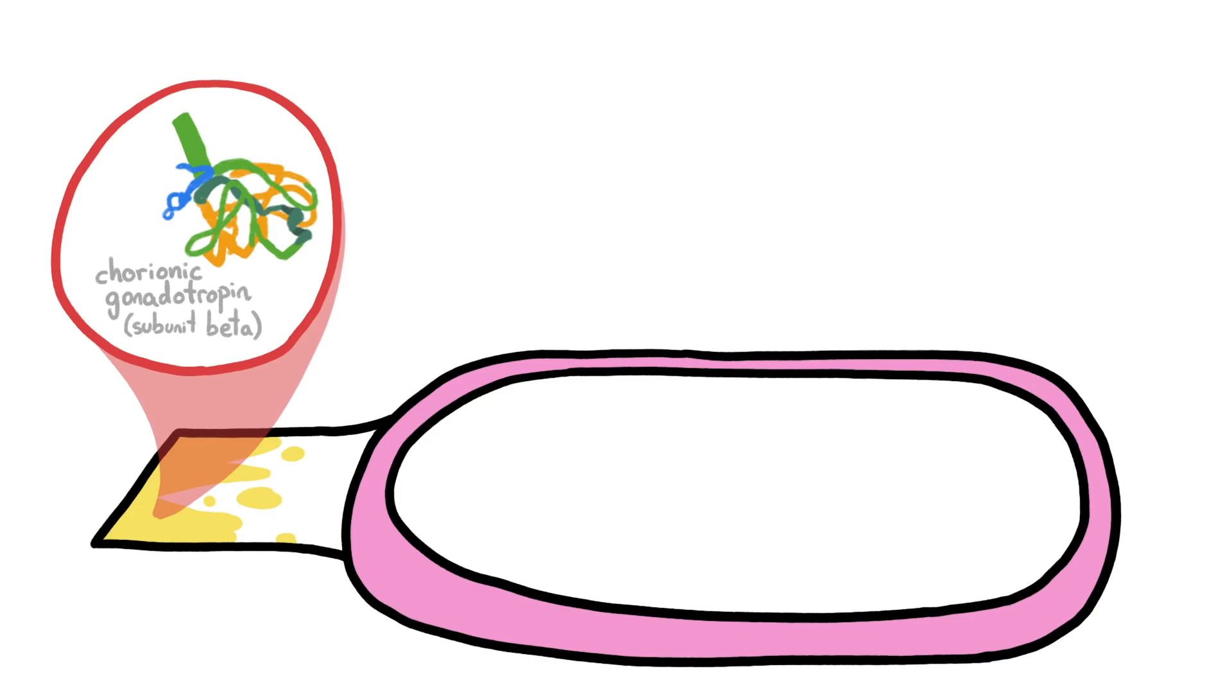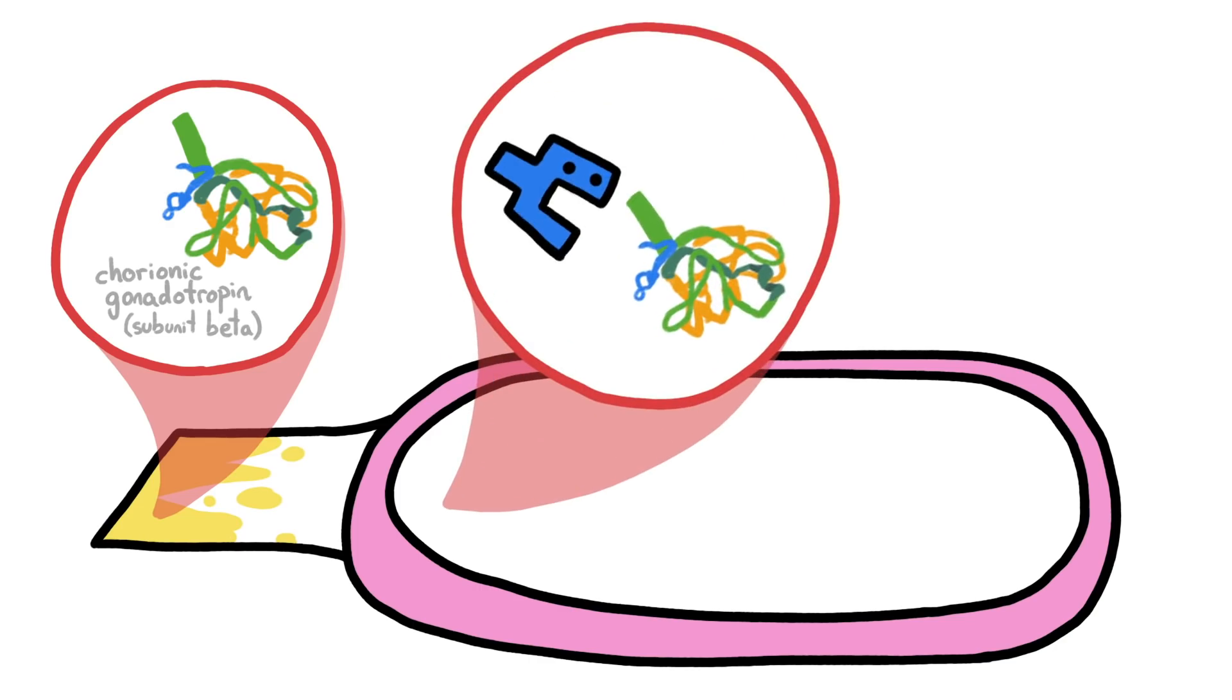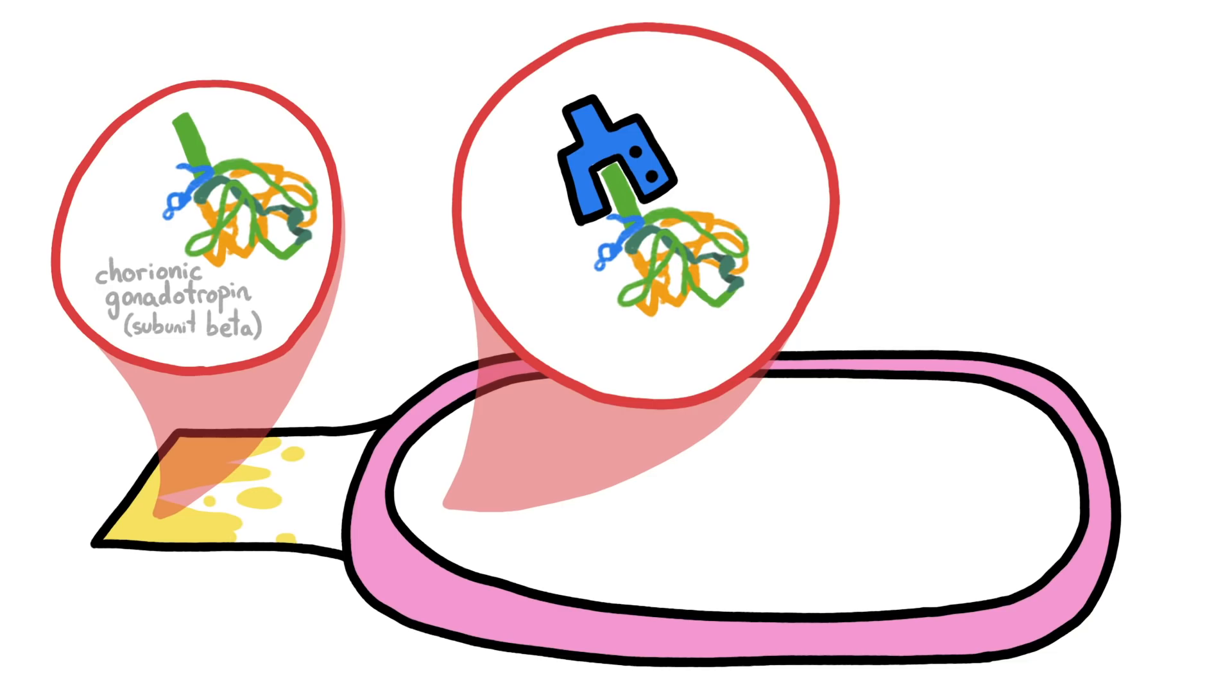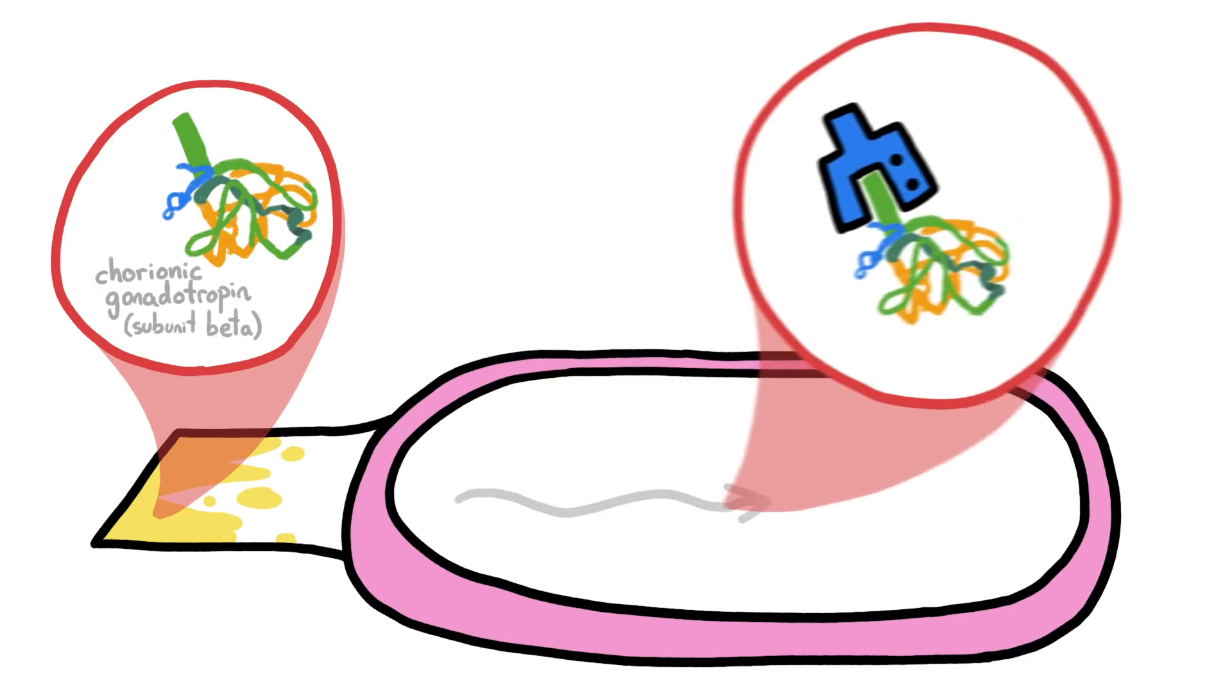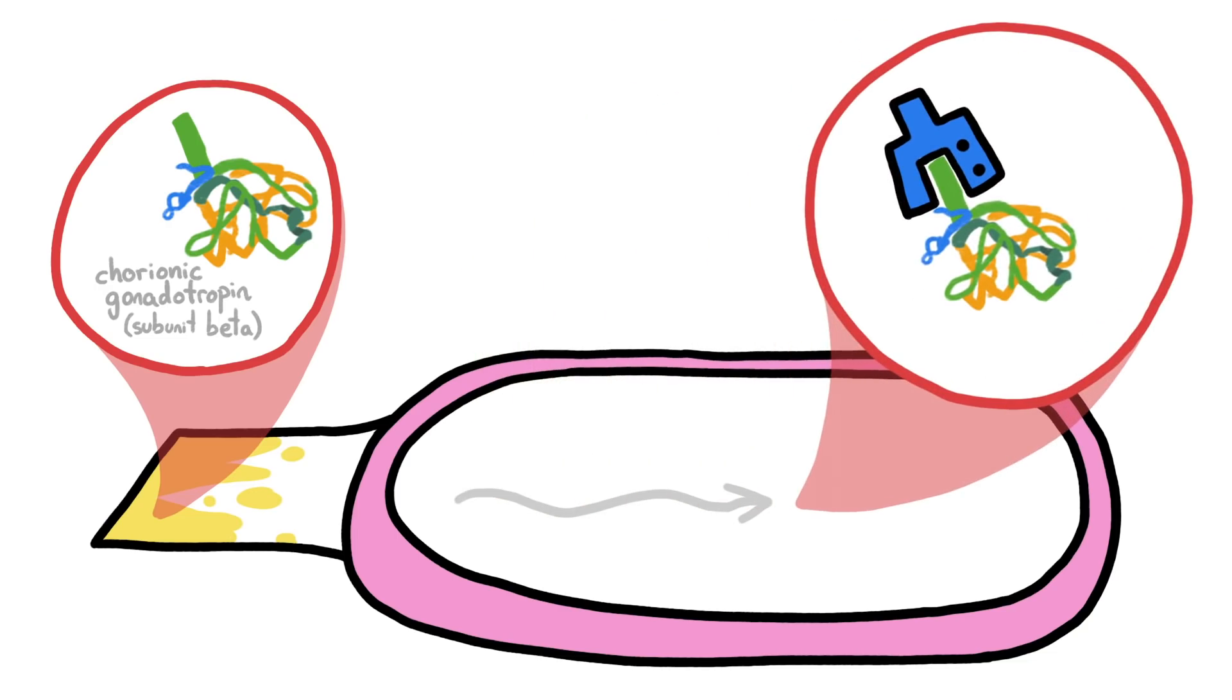If, say, there is pregnancy hormone in your pee, some of those dyed, pregnancy-specific antibodies, which are able to move freely, will latch onto those hormone molecules, get drawn along the test strip by capillary action, and then get locked into place by a second line of undyed antibodies that are glued down farther along the test.